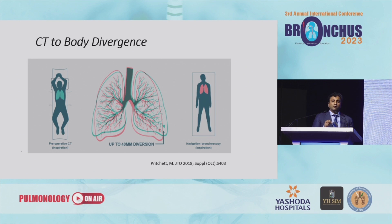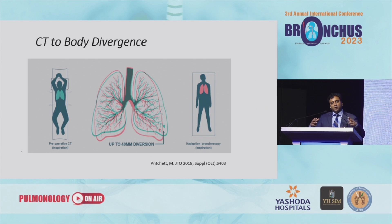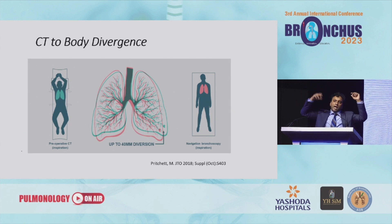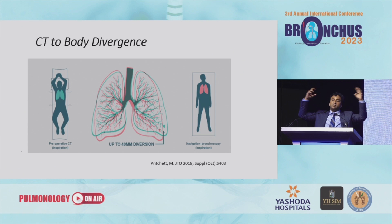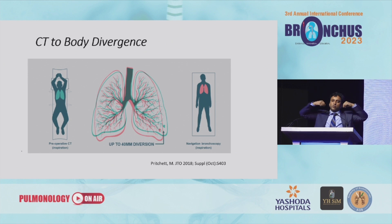Just to give you a rundown of how I perceive CT to body divergence: when we do a CT scan in the planning portion of our procedure, a patient is lying inside a CT scanner with their arms up. A robot voice will say, please take a deep breath and hold it. Patients go to total lung capacity, ideally, and then they take a picture.